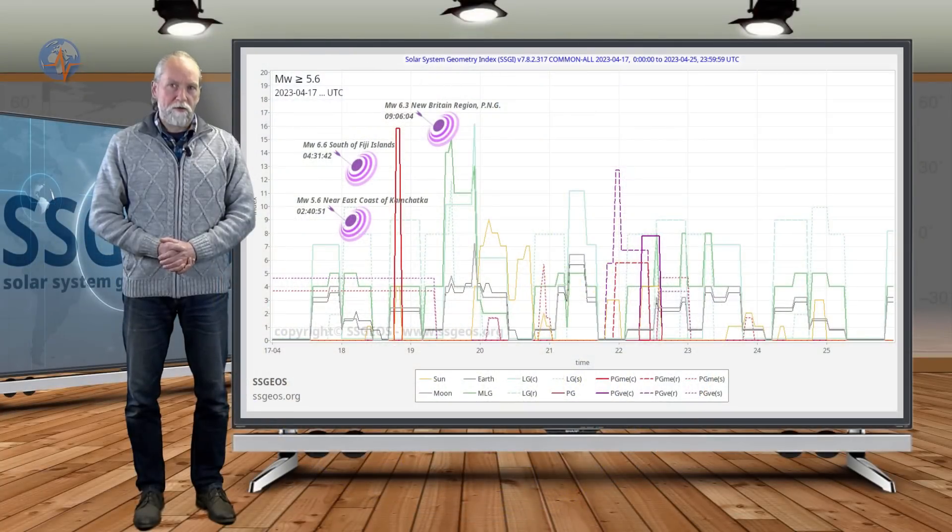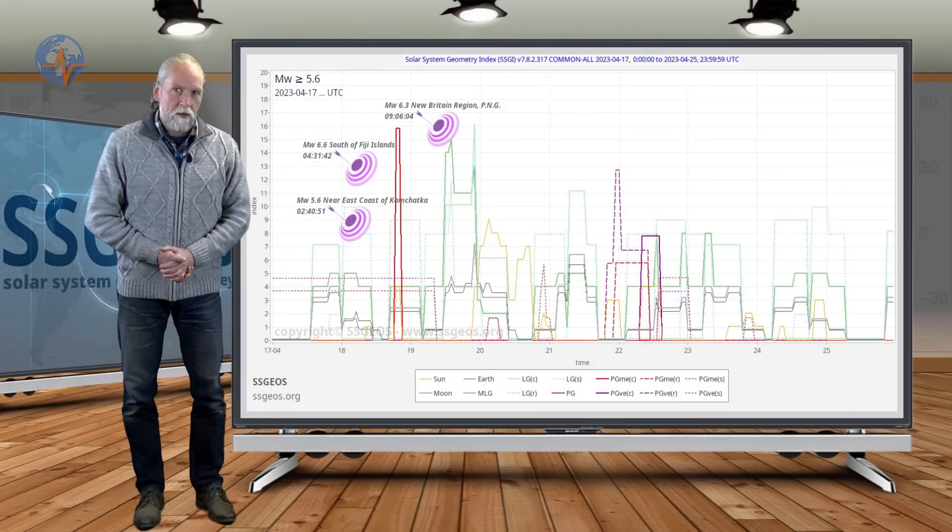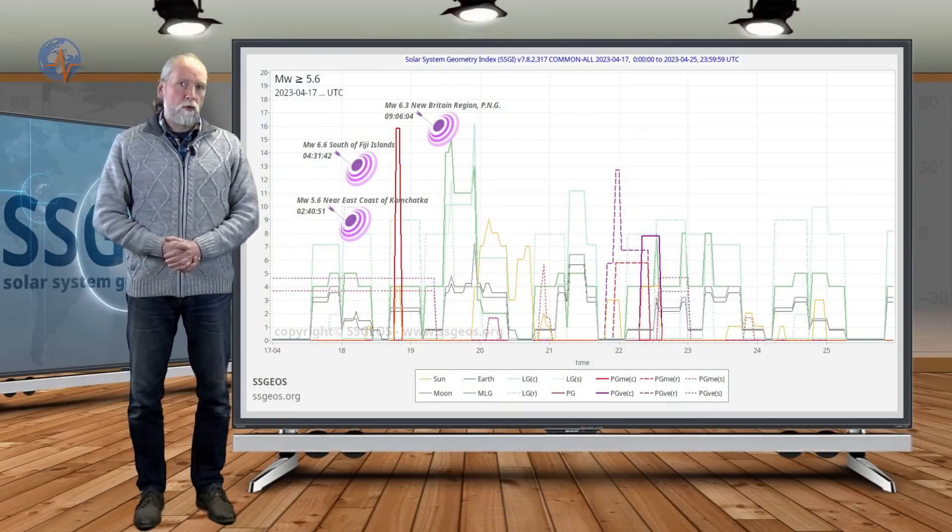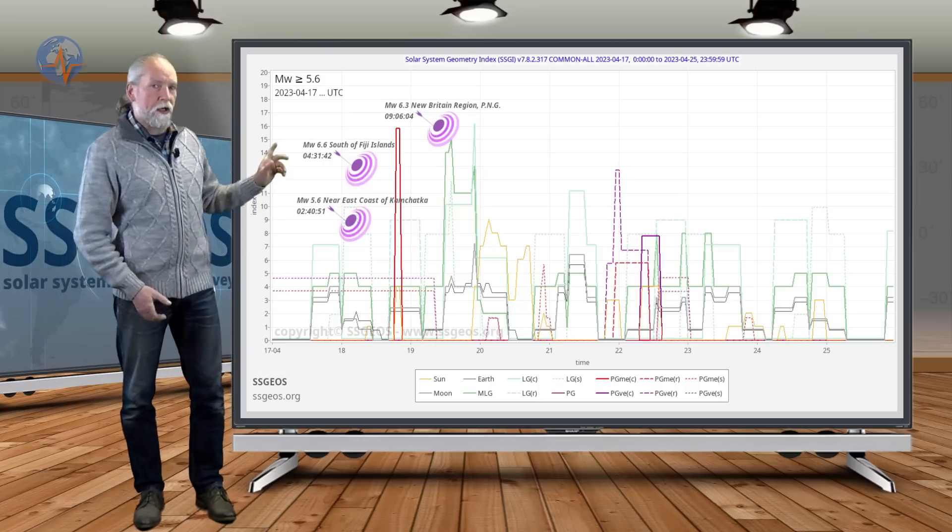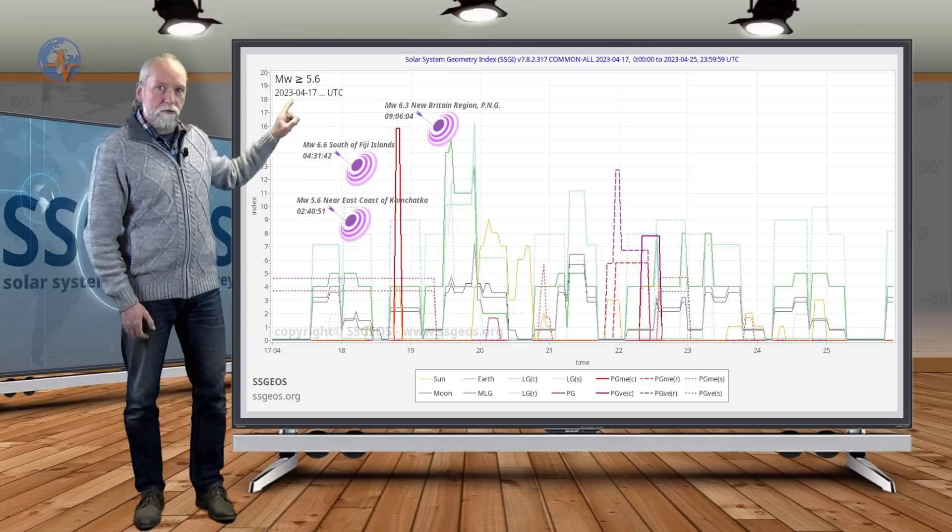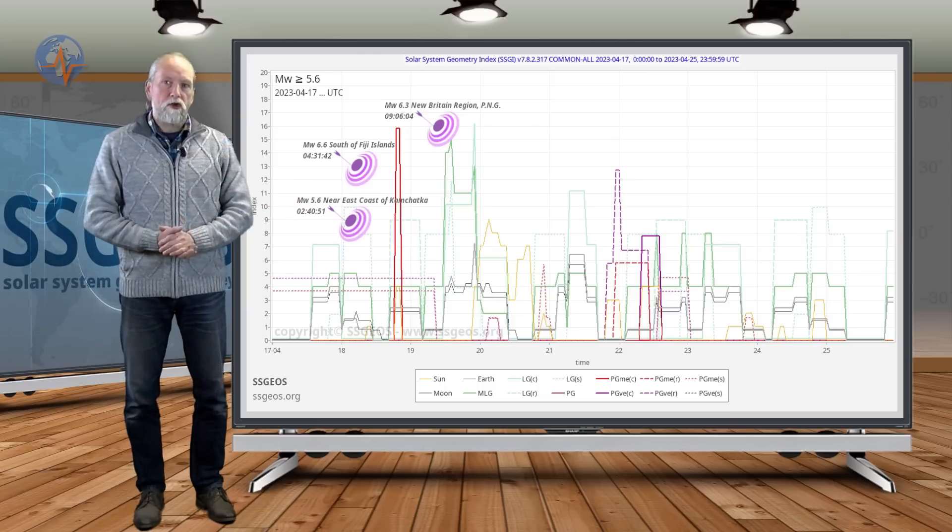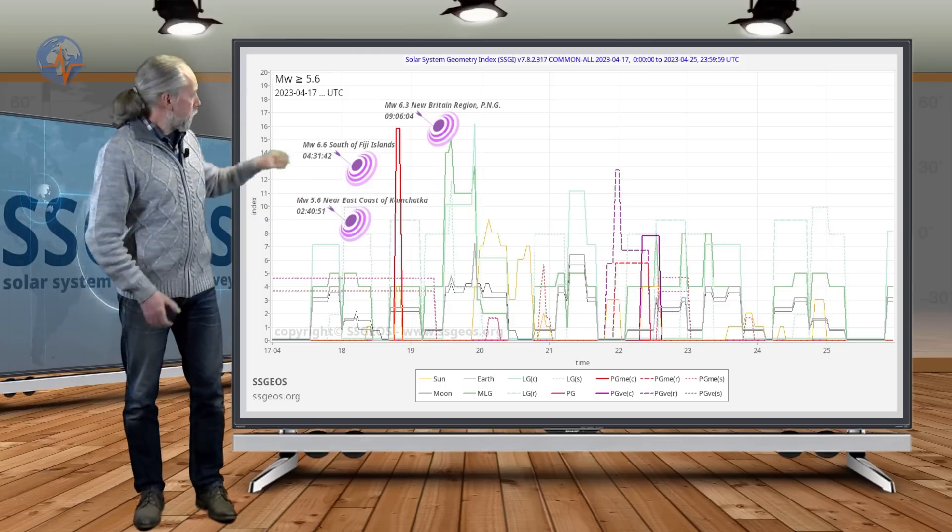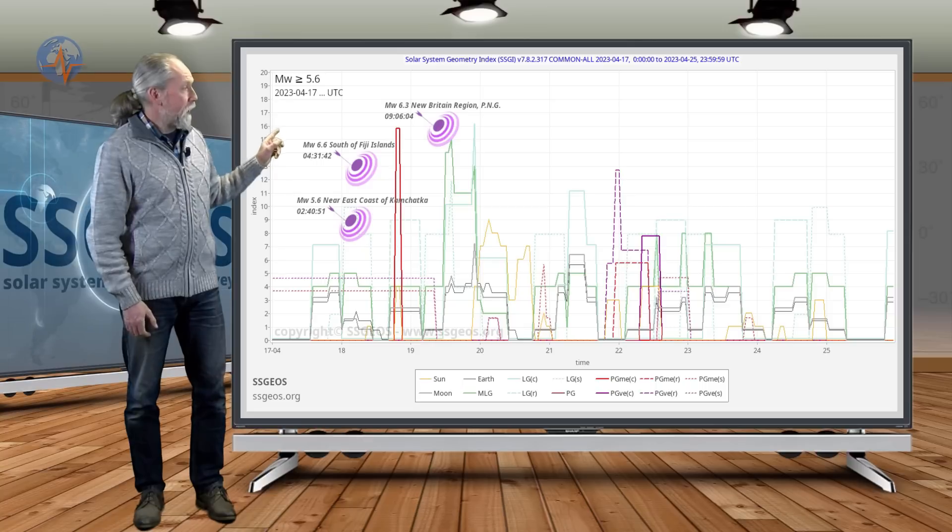Welcome to a new planetary and seismic update. We had some clustering of stronger seismic events if you look at the SSGI graph that was on the 18th and 19th around the planetary conjunction Mercury Sun and Neptune. This is marked by the red peak.